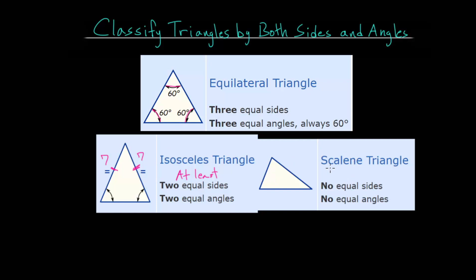Lastly, we have the scalene triangle. This has no equal side lengths, and none of the angles are going to be equal. So maybe the sides are 3, 6, and 7, or some other combination of three different lengths that are all different. All of the angles are going to be different from each other as well.